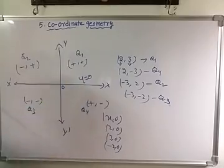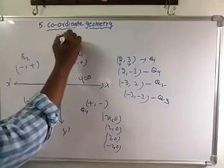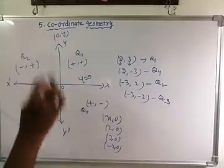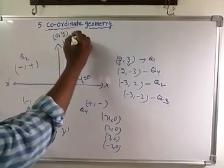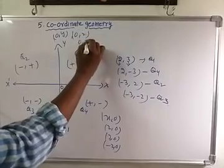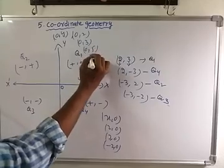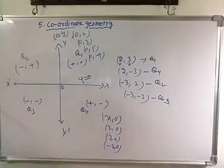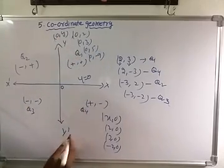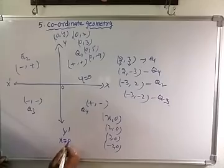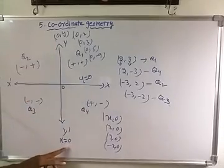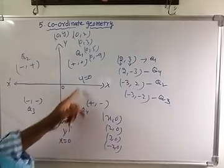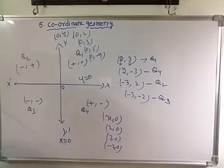What is the point on the y-axis? On the y-axis, x coordinates are 0, so the point is of the form (0, y) — for example, (0,2), (0,3), (0,5), (0,-9). Therefore, the equation of the line of the y-axis is x = 0. So, x = 0 is the equation of the y-axis, and y = 0 is the equation of the x-axis.